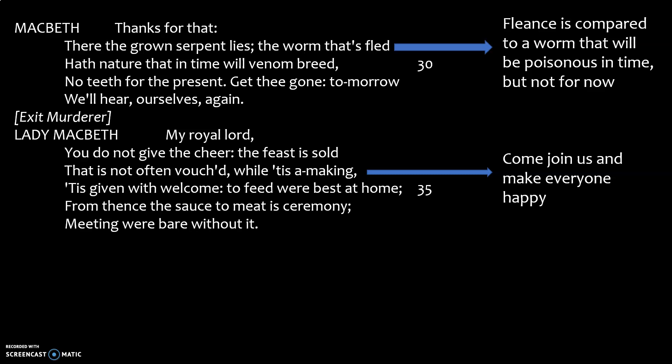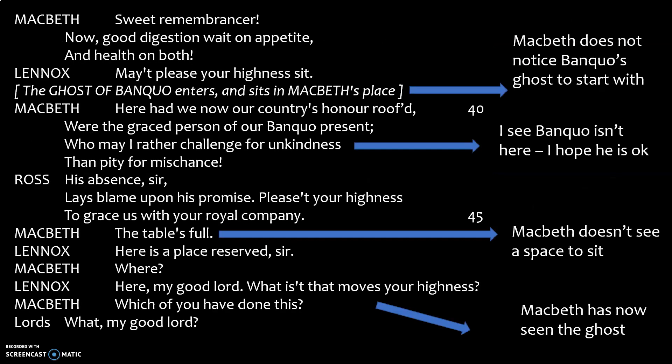Macbeth calls everyone over — 'come and give cheer, come and make everyone happy.' The ghost of Banquo appears and goes to sit in Macbeth's chair while Macbeth is still wandering around. Macbeth says 'if only Banquo were present here,' and Ross says basically it's his own fault he's not here. Then Macbeth says 'the table's full.' A place is pointed out, and when he goes to sit, someone asks 'what is it that moves your highness?' — Macbeth has now seen the ghost.